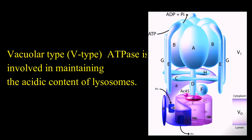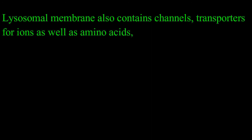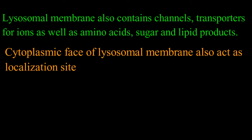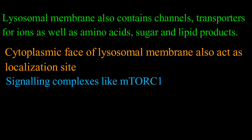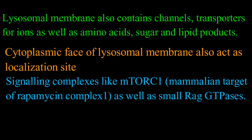Vacuolar type, that is V-type ATPase, is involved in maintaining the acidic content of the lysosomes. The lysosomal membrane also contains channels and transporters for ions as well as amino acids, sugar and lipid products. The cytoplasmic face of the lysosomal membrane also acts as a localization site for signaling complexes like mTORC1, that is mammalian target of rapamycin complex 1, as well as small RAG GTPases.